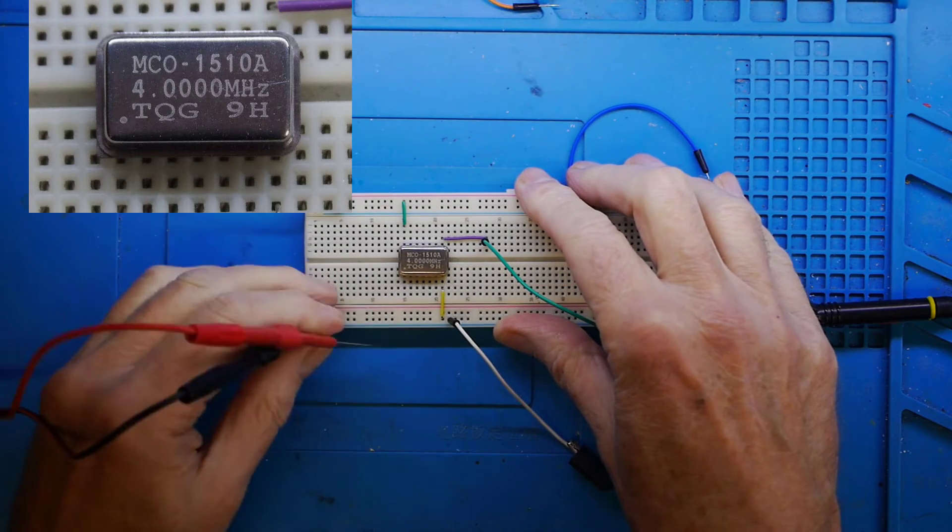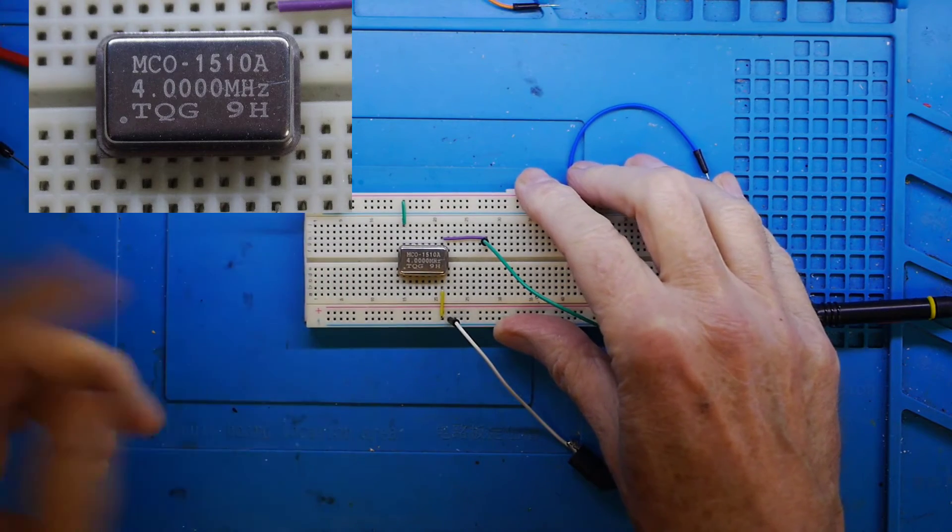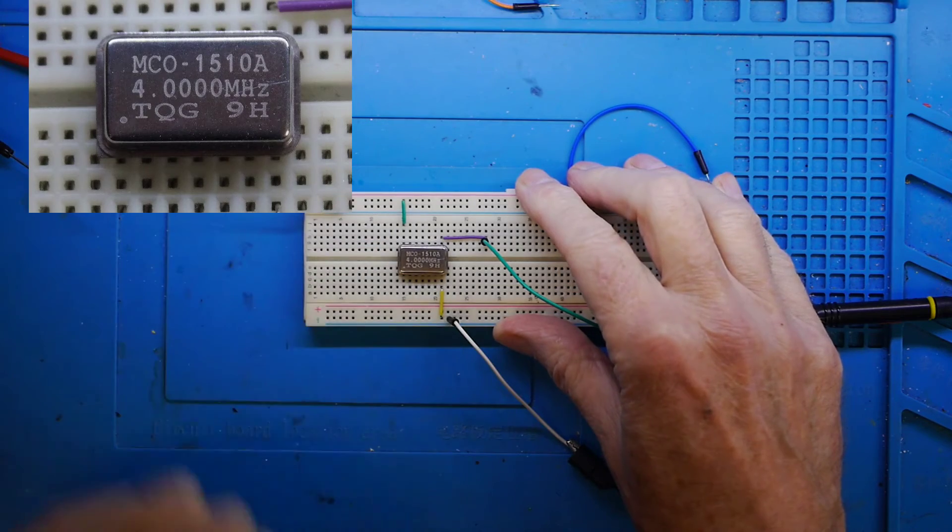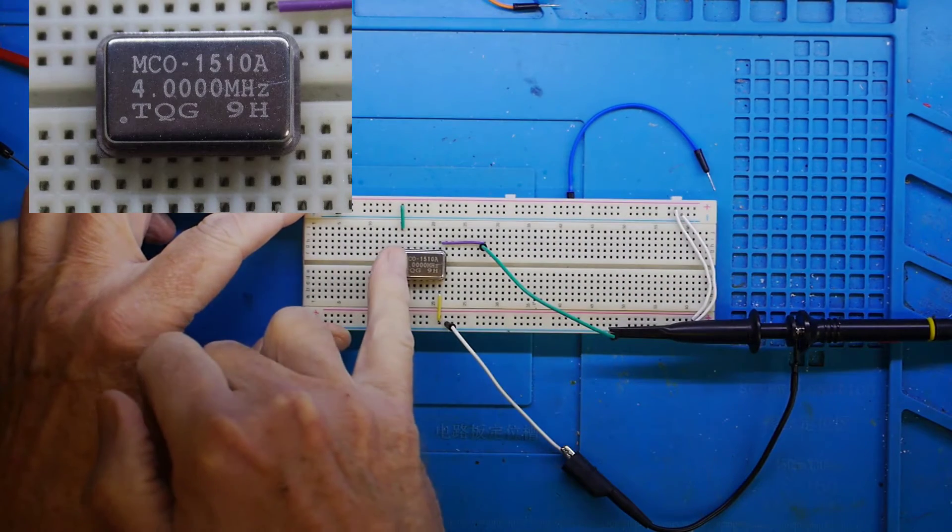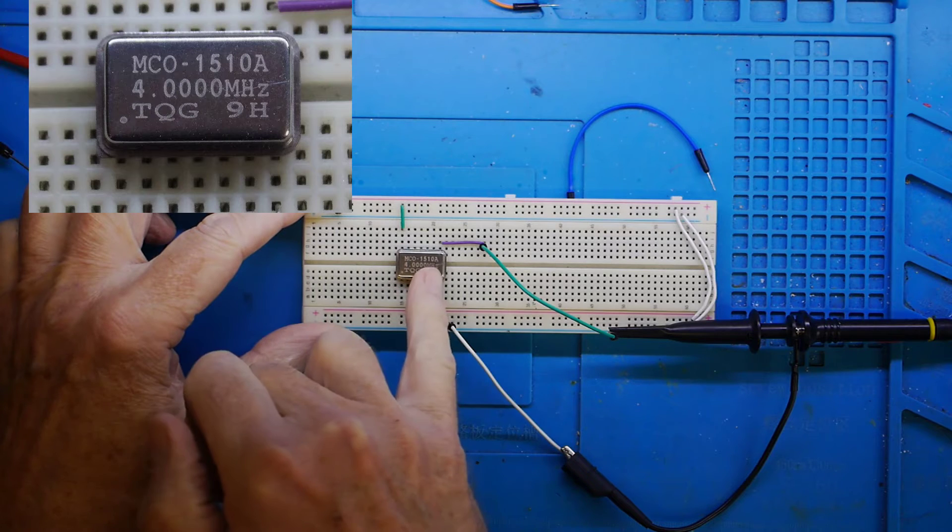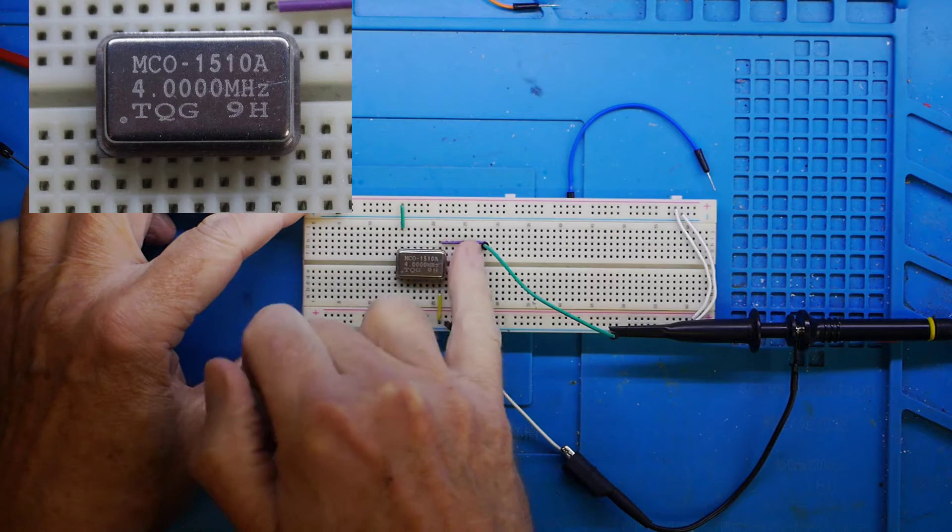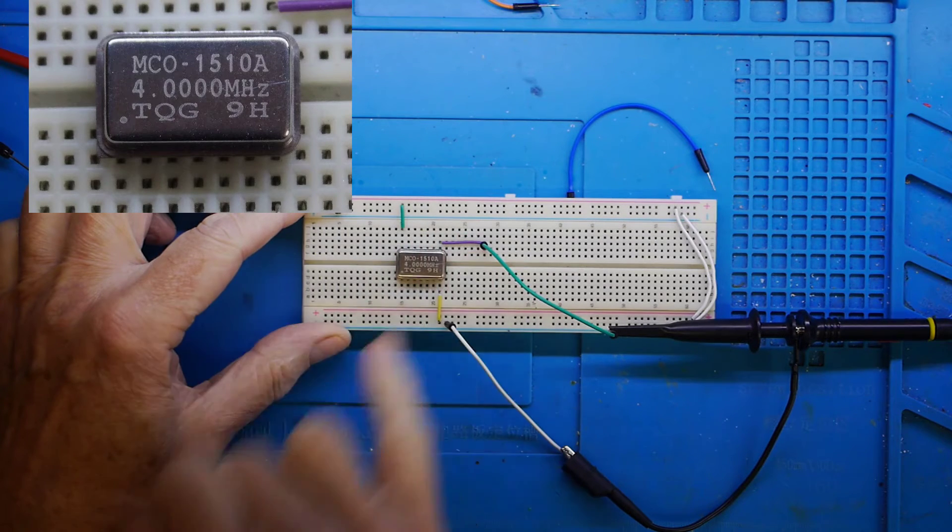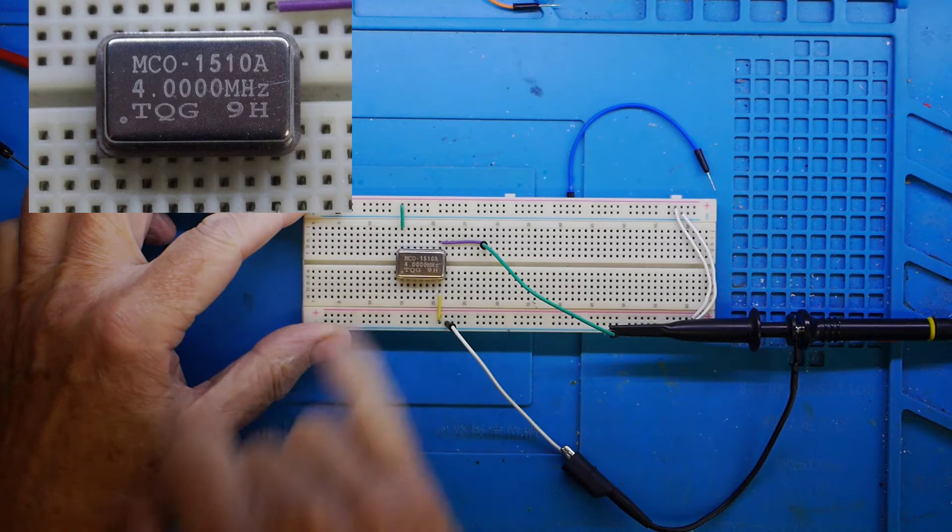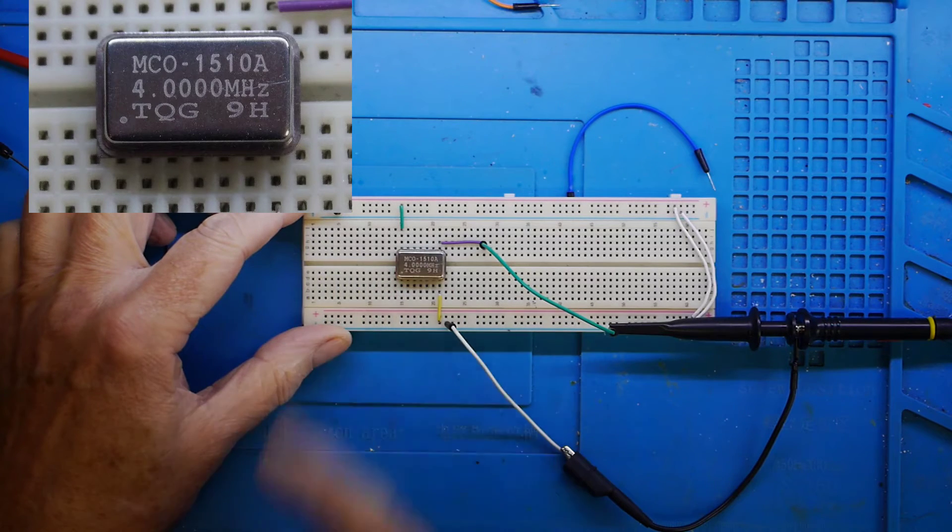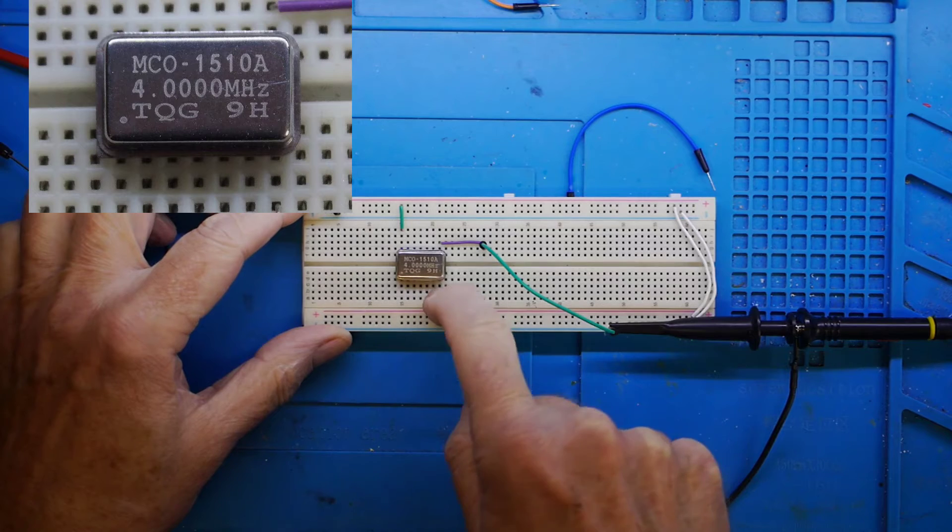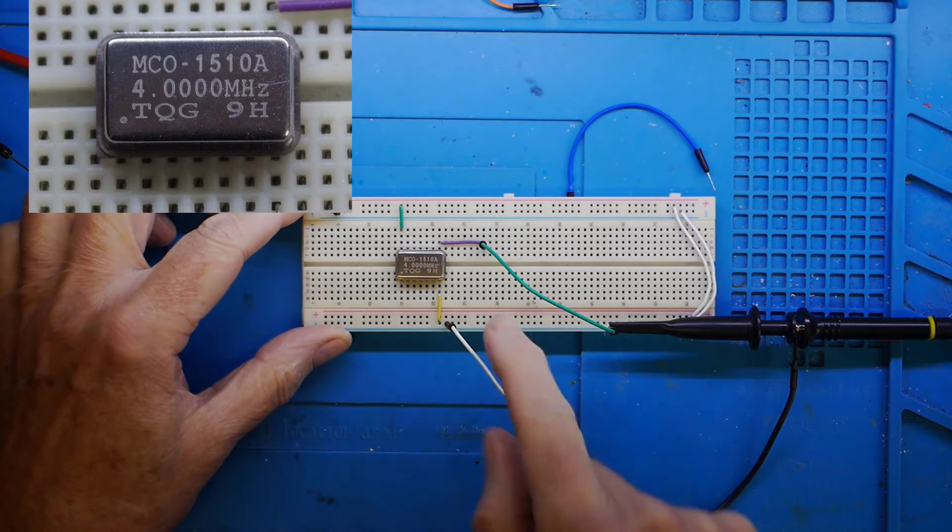This one produces a square wave output. They come at various frequencies, this one's a 4MHz one. An absolute doddle to set up: positive supply to one of the pins, ground to the other pin, and output from the third pin here. There's a fourth pin that's not connected, so don't try and use that as ground because you get a very strange looking output. The negative connection and the ground share the same.